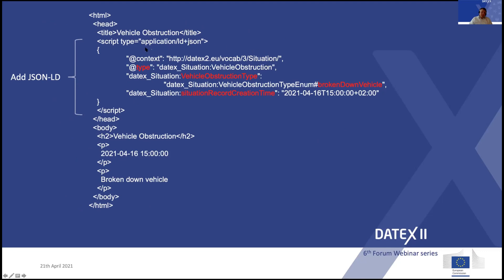I say the context is from datex.eu/vocab/situation — that is the situation namespace. I declare that the type I'm describing is a vehicle obstruction, and I also specify a vehicle obstruction type as an attribute on this class — in this case, a broken down vehicle. For the date, I say the attribute used is situation record creation time, followed by the date-time value. In this way, for a machine, we have to provide a lot more than just unstructured text.